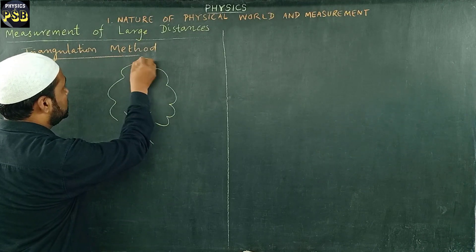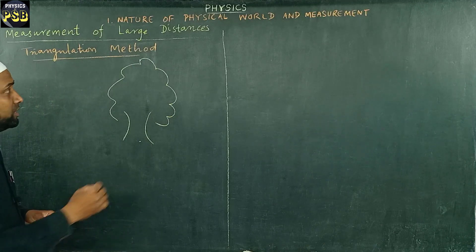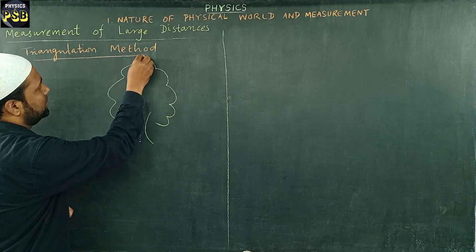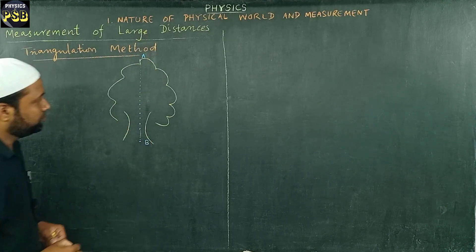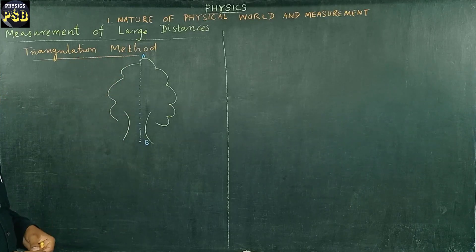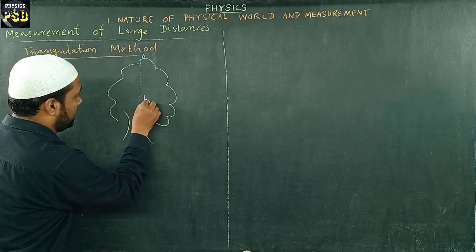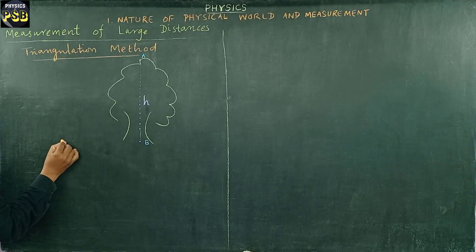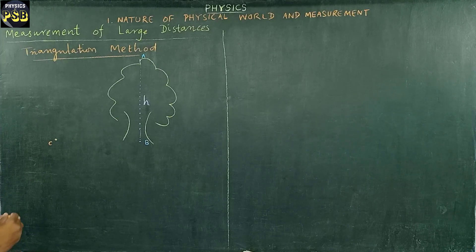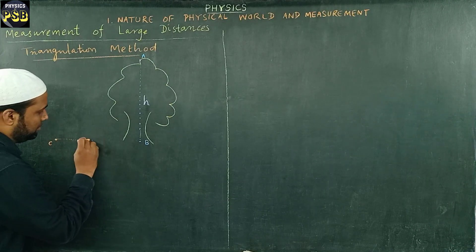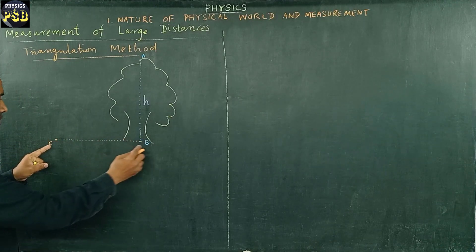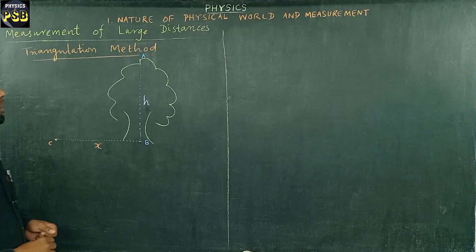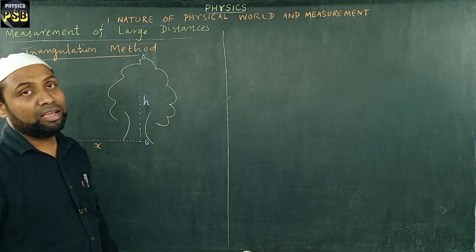To do so, we consider two points: one at the top and another at the bottom. I take the point at the top as A and the point at the bottom as B. Here AB represents the height of the tree, which I take as H. Then I consider one point C on the surface of the Earth, and connect points B and C. The distance between B and C can be measured and is taken as X.